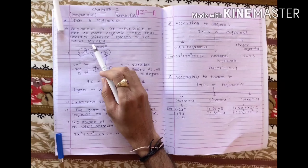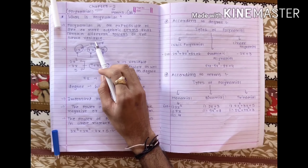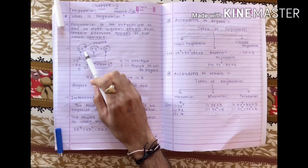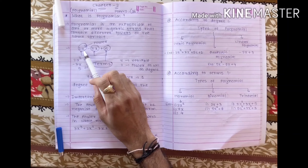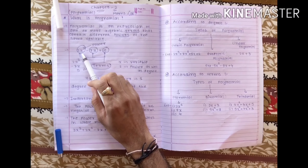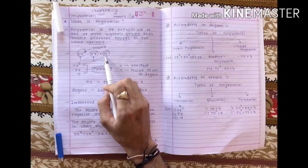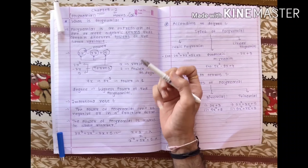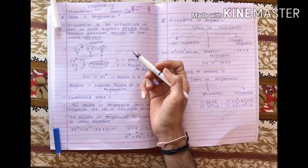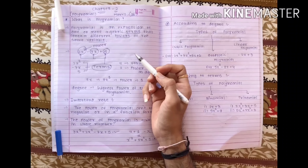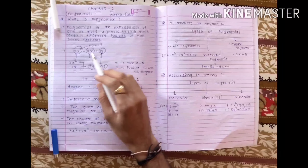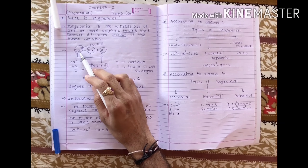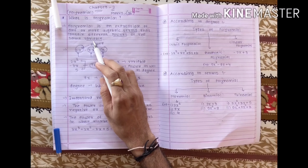Then comes the third concept: variable. What is a variable? In an algebraic expression, we use alphabetical letters like x, y, z, a, b, c, etc. These alphabetical words that we use are called variables.